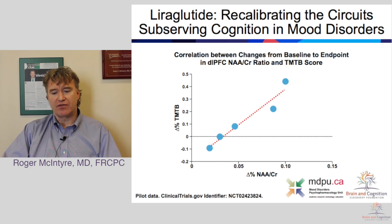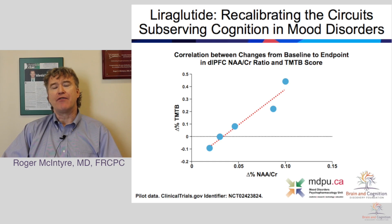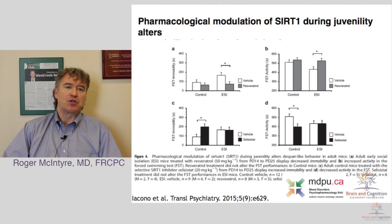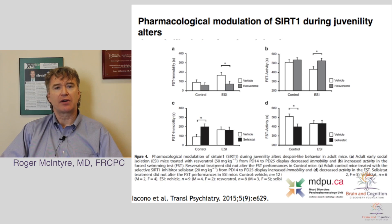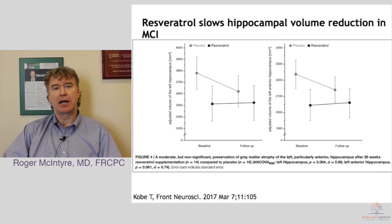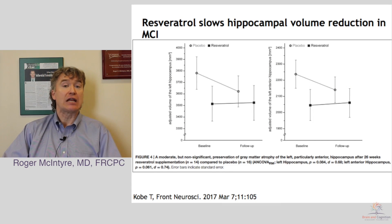Returning to resveratrol and caloric restriction affecting sirtuin activity — there is also the capability of modulating sirtuin activity with pharmacological approaches, and several experimental approaches are underway. Evidence indicates that modulating with an exogenous approach, whether a pharmaceutical or resveratrol, can increase sirtuin activity, which has been shown to reduce the overall stress response in the animal. Moreover, in patients with mild cognitive impairment, resveratrol may slow hippocampal volume reduction, which is an interesting proof of concept about the possible role of sirtuins.